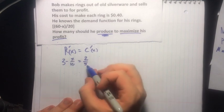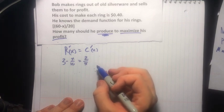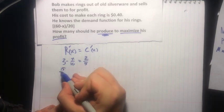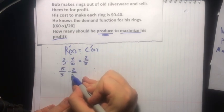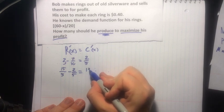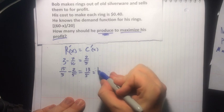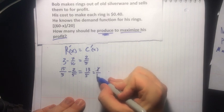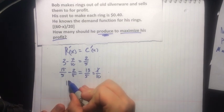So we get 15/5, which is my 3, minus 2/5, and that's just going to equal 13/5. And that's going to equal my x/10. We'll multiply both sides by 10 and we're going to get 130 divided by 5 is going to equal my x.